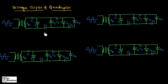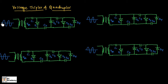Now let us see the operation of this circuit by considering the AC signal. For this AC signal, we are having positive half as well as negative half of the cycle. We will consider each half of the cycle and understand the working of this circuit.